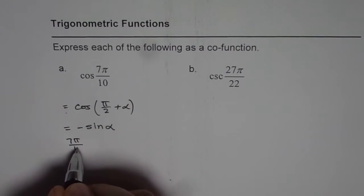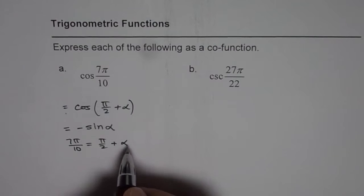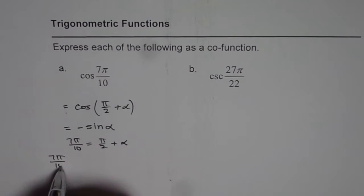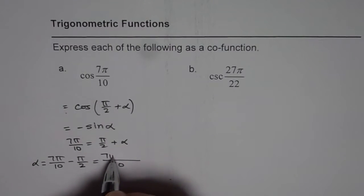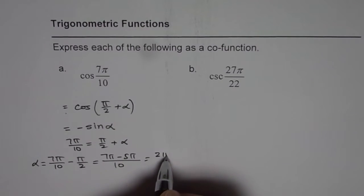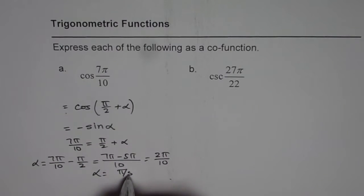So we have 7π/10 equals to π/2 plus α. So from here we can say 7π/10 minus π/2 is equals to angle α. So we get 10 as the common denominator, 7π minus 5π. So that gives us 2π/10. So we get α as equal to π/5.